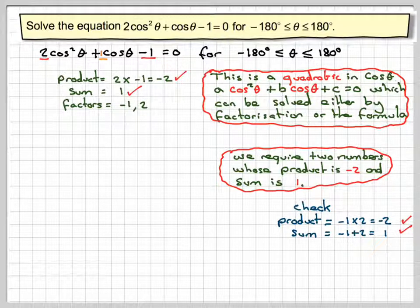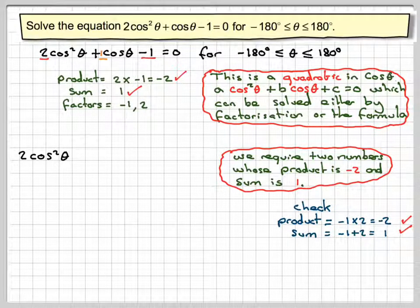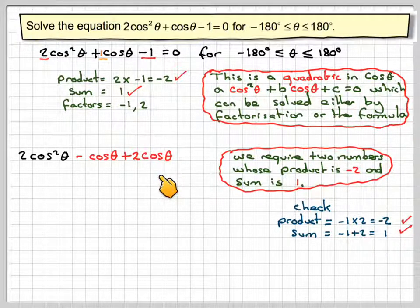And then what you do is you take the quadratic equation and you write down 2 cos squared theta, but you split the middle term up into minus cos theta plus 2 cos theta. Now it doesn't matter which way round you write those two things. And then we need to put on the minus 1 at the end and it's still equal to 0.